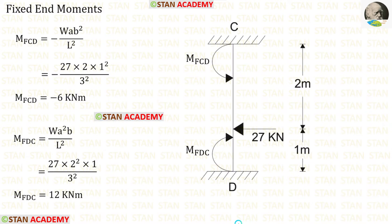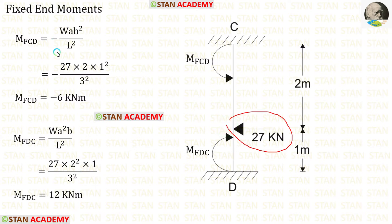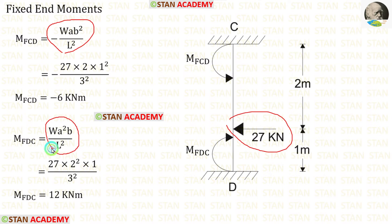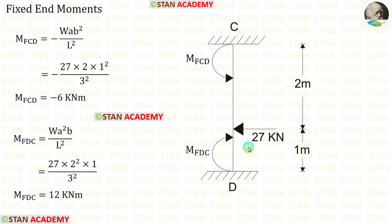Now let us find the fixed end moments in column CD. In column CD there is an eccentric point load of 27 kN. The formulas for the fixed end moments are minus WAB squared upon L squared and positive WA squared B upon L squared. Here W is 27, A is 2, and B is 1. When we apply these values, we get M of CD and M of DC.